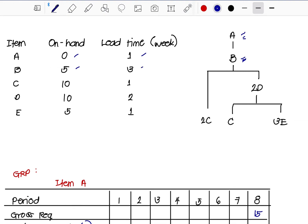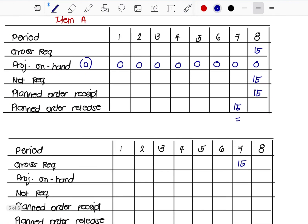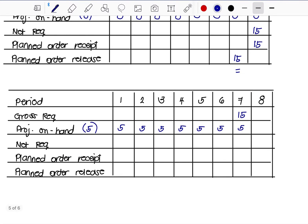The on-hand of 5 is carried over until the week it is needed. The net requirement is |5 − 15| = 10. We need to receive it by Week 7. Based on a lead time of 3 weeks, counting back 3 weeks — 1, 2, 3 — brings us to Week 4. So we set the planned order release on Week 4 to receive by Week 7.